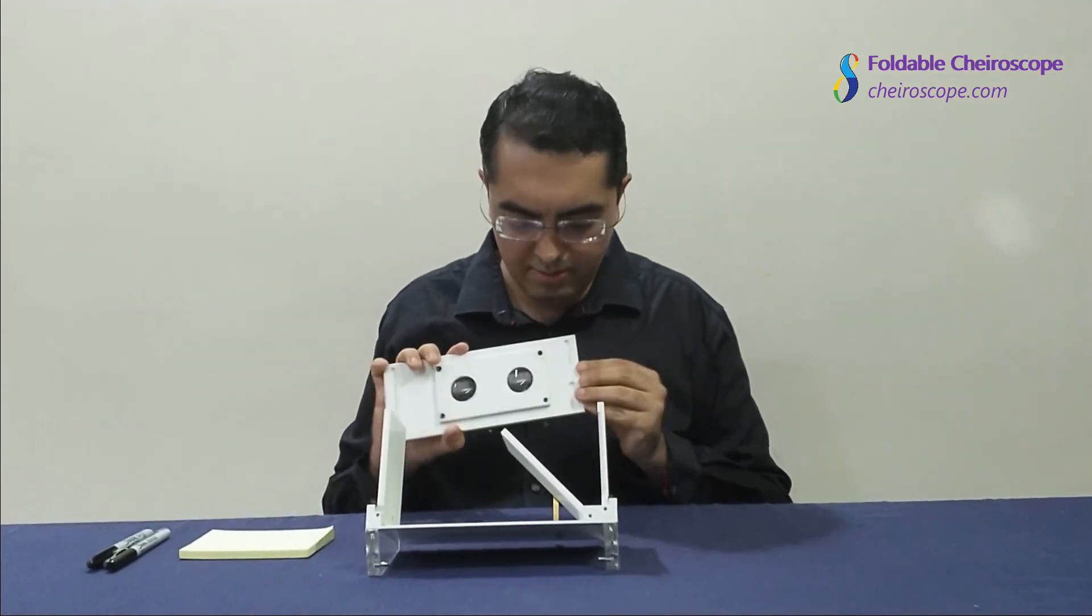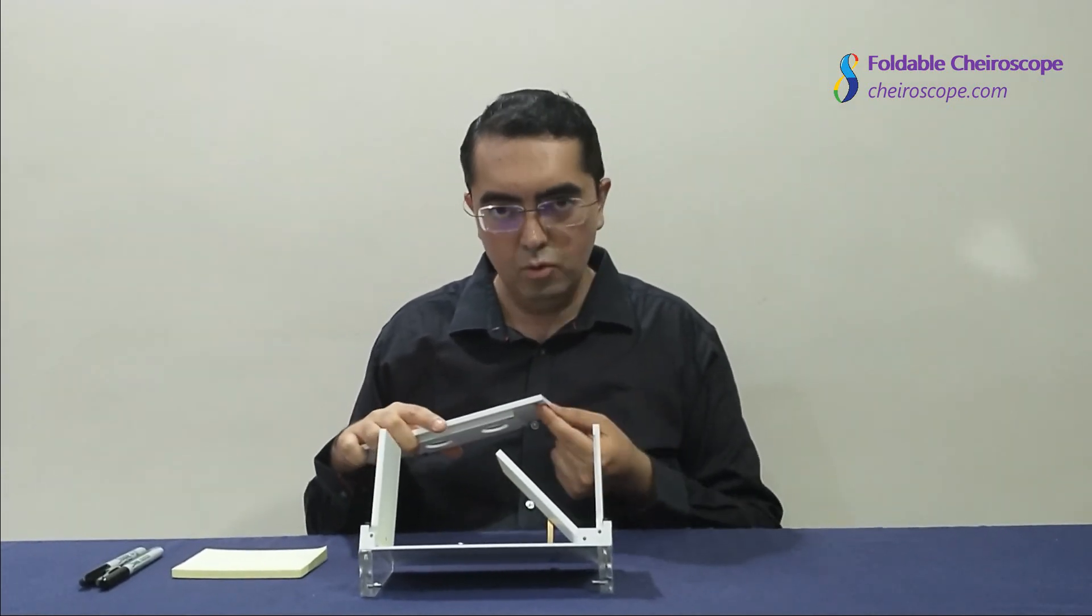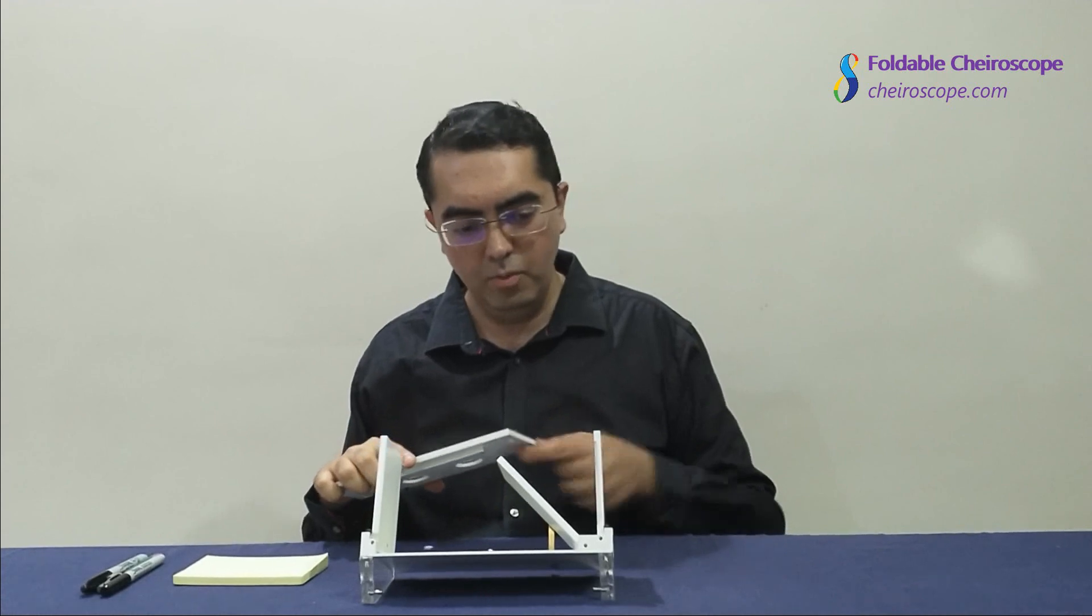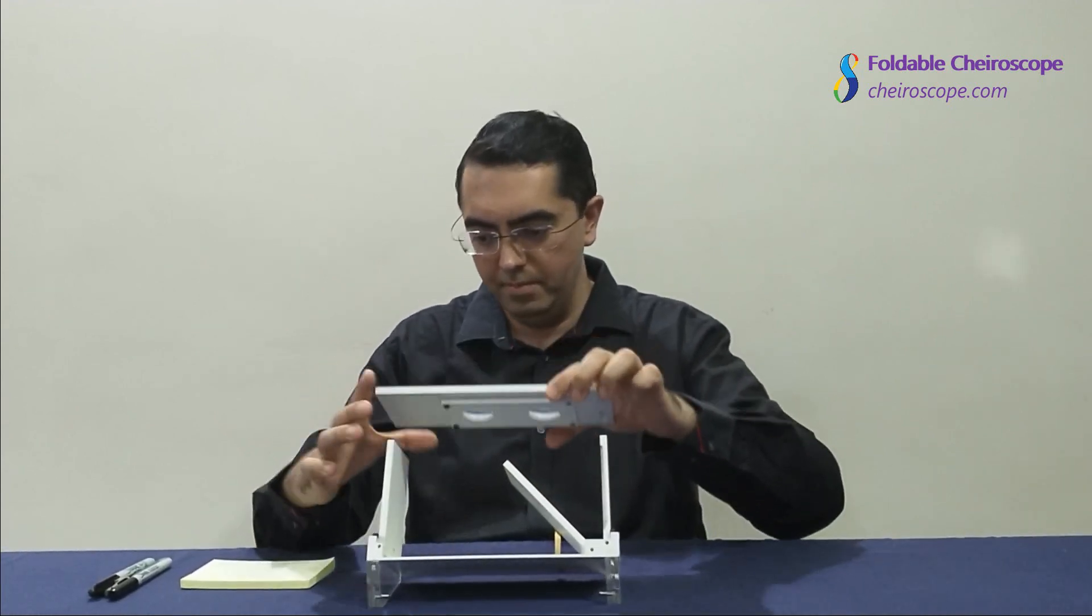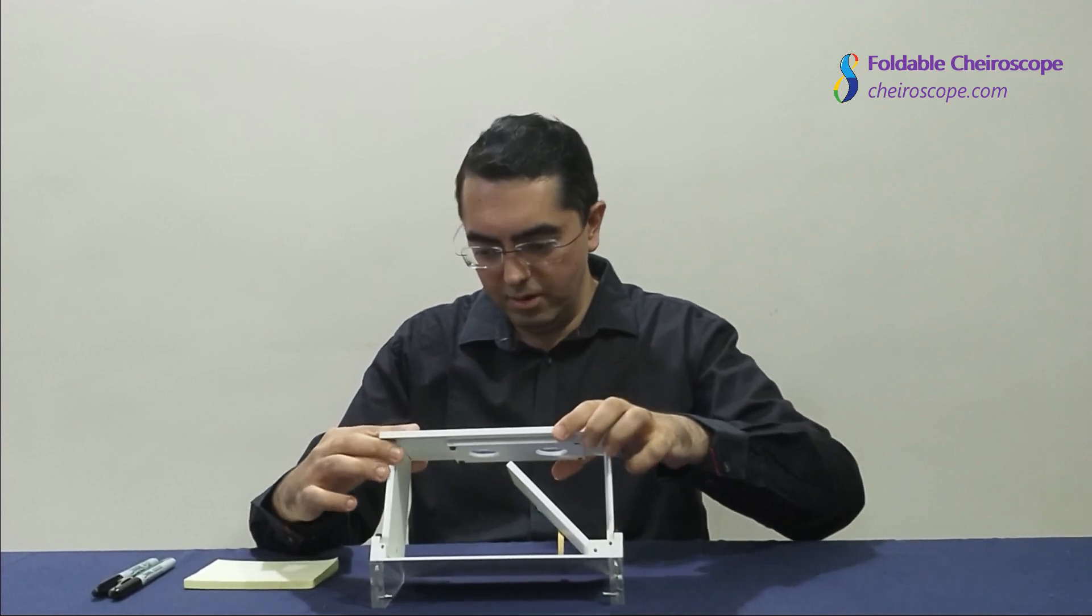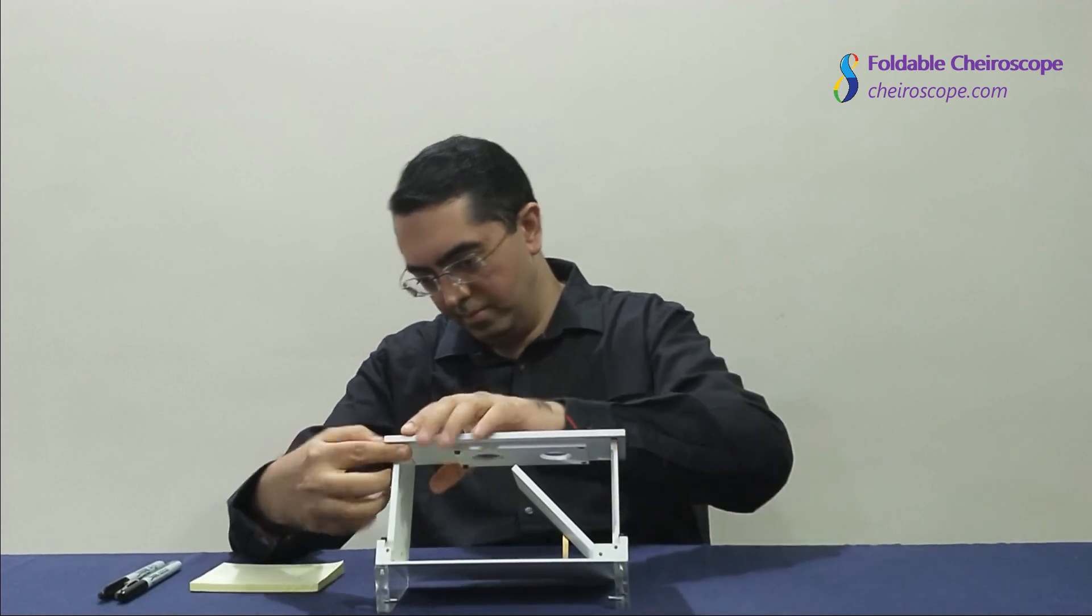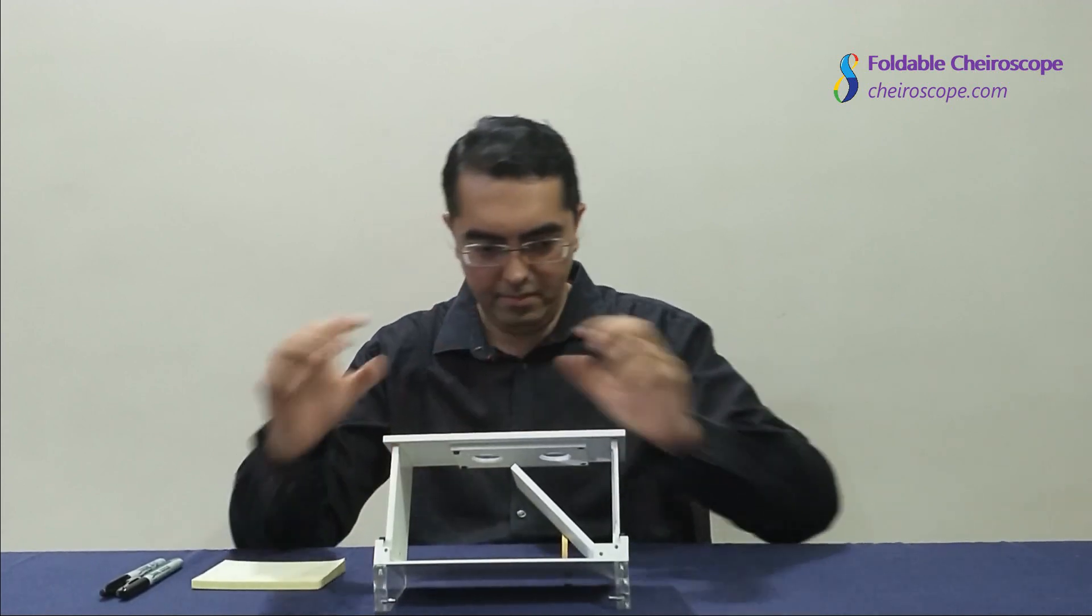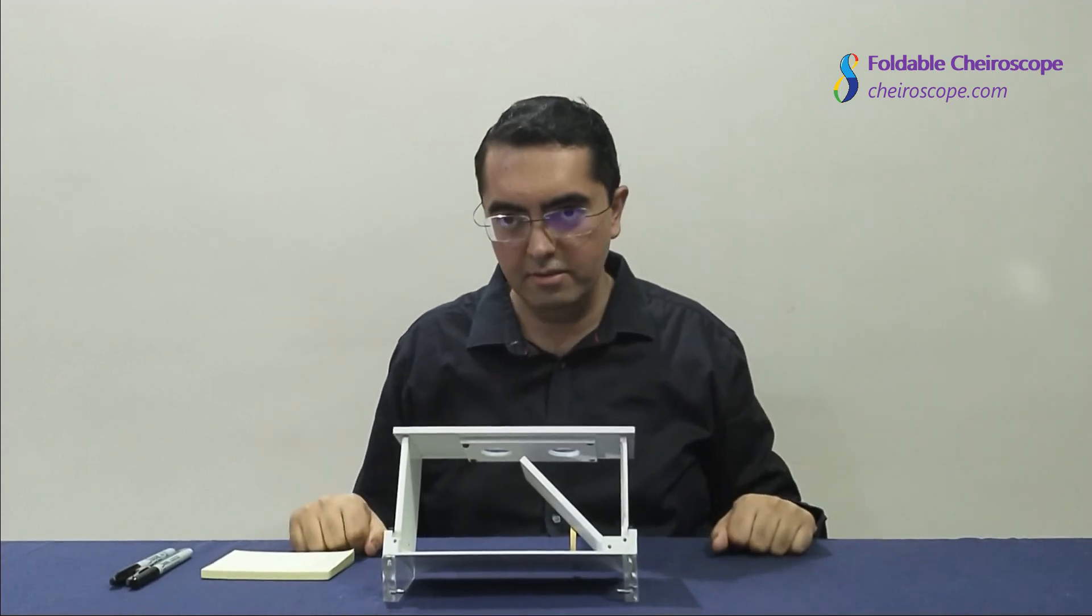This lens plate has been designed such that it can only fit in one direction. There are two slots underneath and they correspond to the respective slots on the vertical plates. Just place the lens plate on the vertical supports and it sits nice and snug.